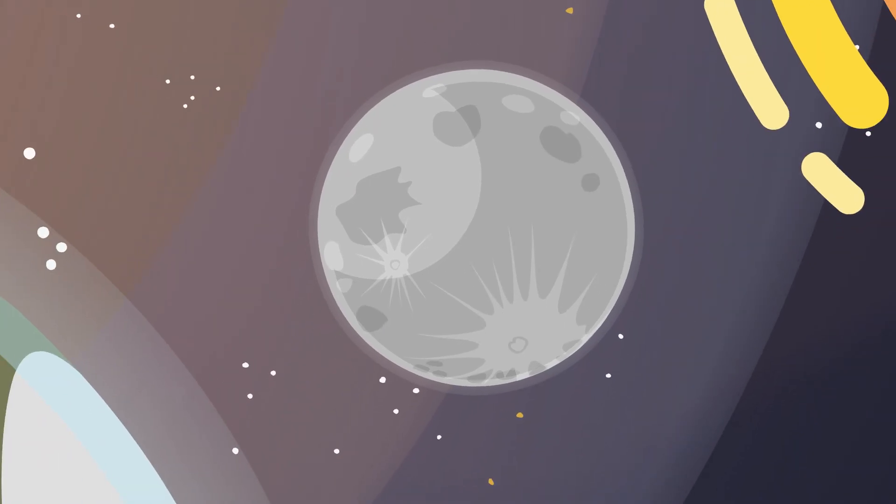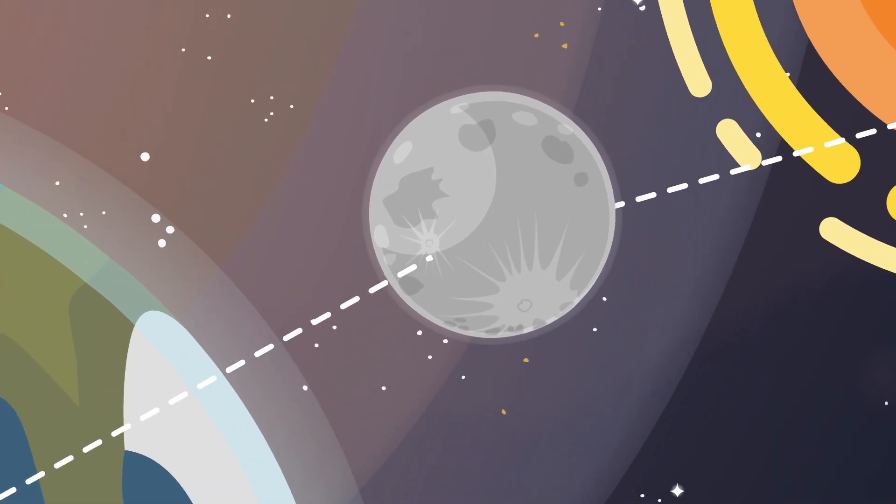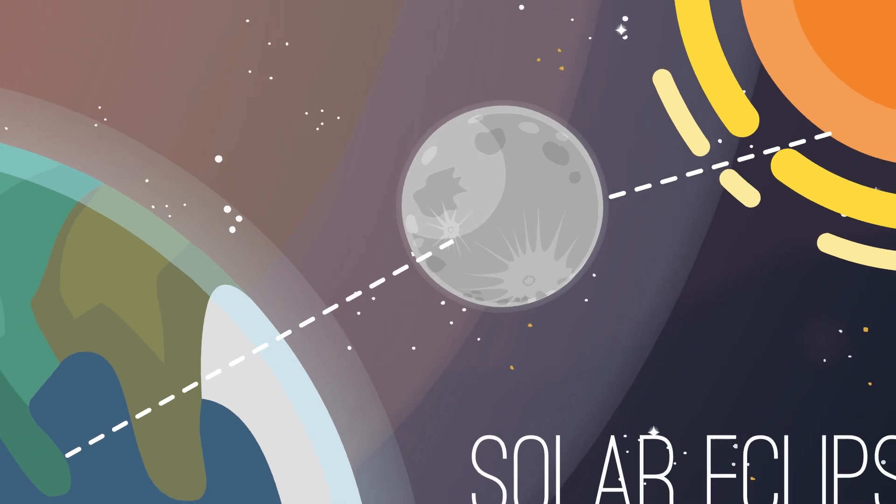But what exactly is a solar eclipse? A solar eclipse occurs when the moon comes between the sun and the earth, casting its shadow on our planet.